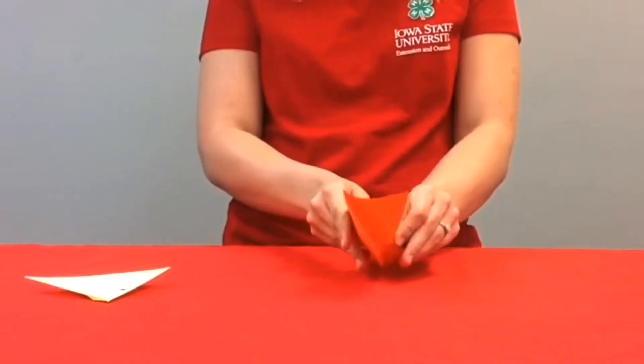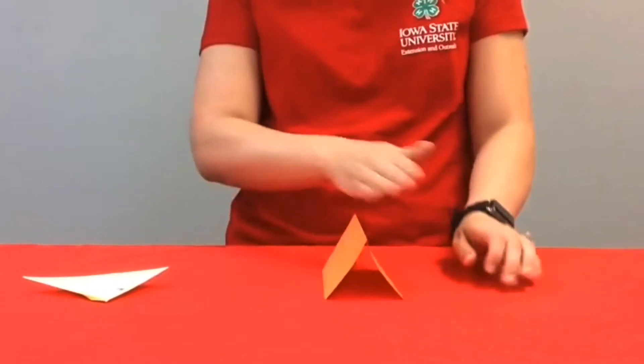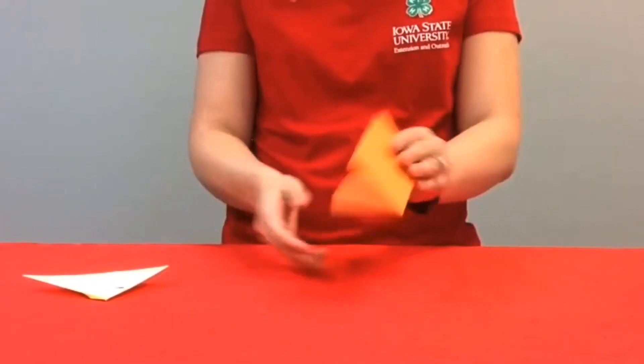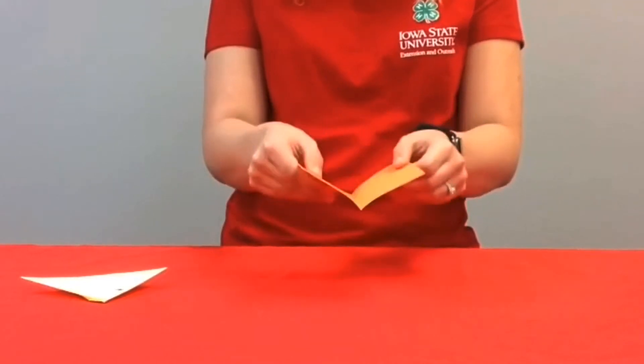So now you have a mountain fold because it looks like a mountain and then you have a valley fold because V for valley.